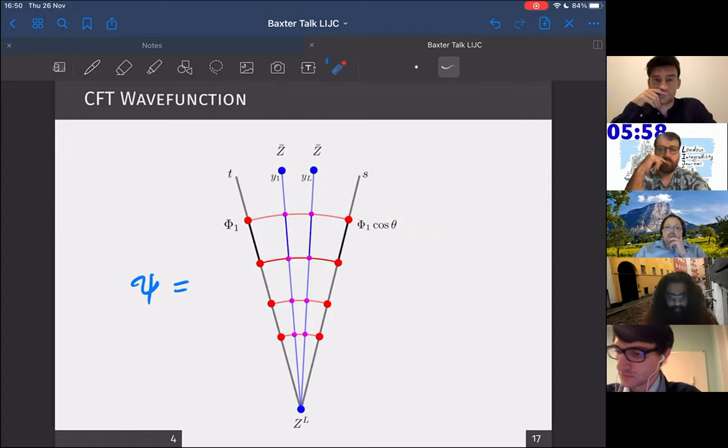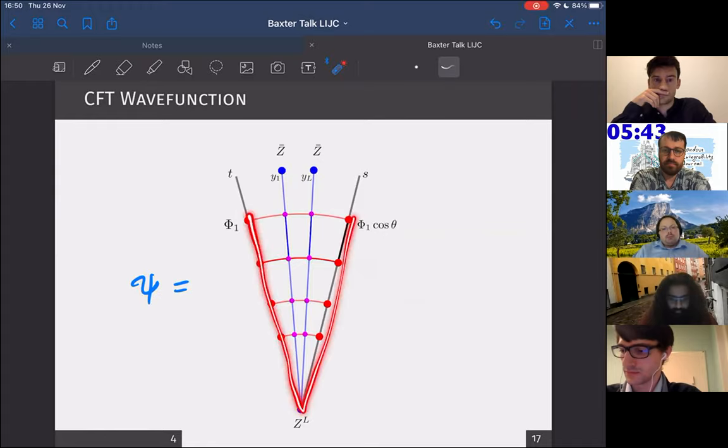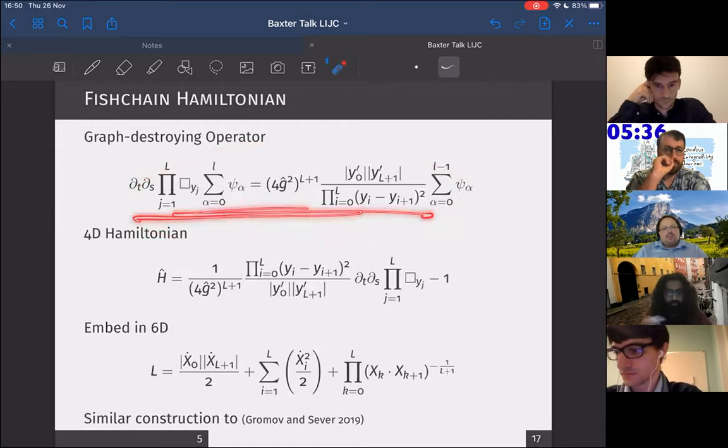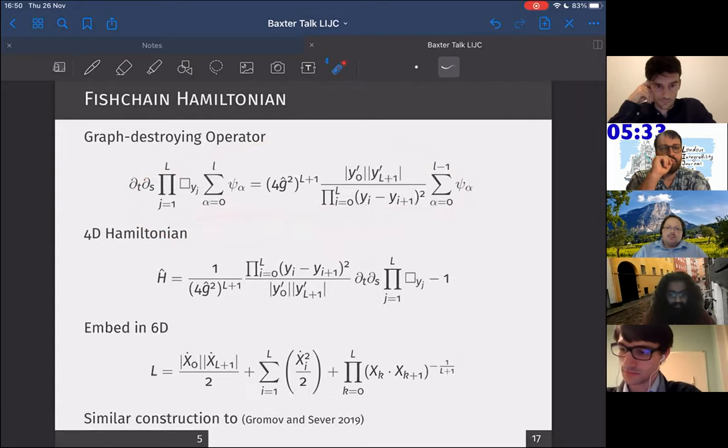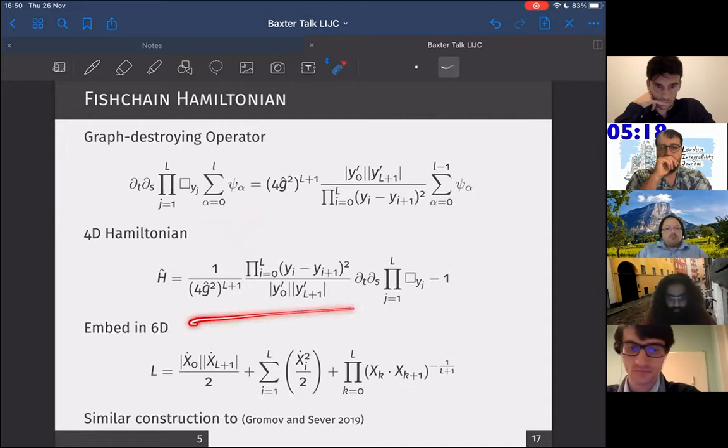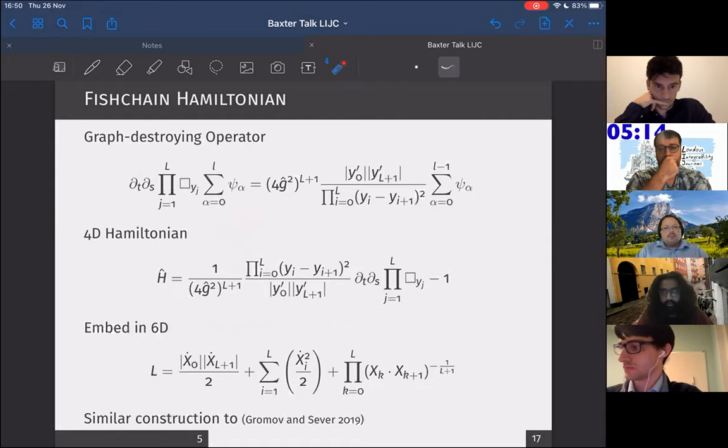If you look at the Feynman diagrams of this CFT wave function, they have an iterative structure and we can label them by bridges. For example, a diagram with four bridges. The interesting part is that I can define what's called a graph destroying operator, which I can act on the CFT wave function and it will reproduce for me the same CFT wave function but with one bridge less. Why this becomes interesting is because if we take the number of bridges alpha to infinity, then it turns out that our CFT wave function psi actually behaves like the ground state of a Hamiltonian of an open spin chain of particles, which we call the open fish chain.